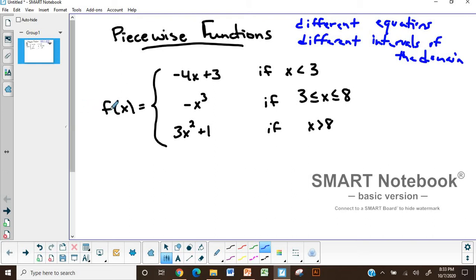In our example here, the function f(x) is piecewise defined by -4x + 3 if x < 3. We have -x³ if x is greater than or equal to 3 and less than or equal to 8.